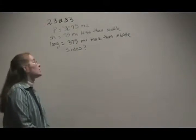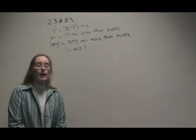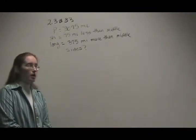Okay, we're doing number 33 in 2.3, and we're asked to find the sides of the Bermuda Triangle.